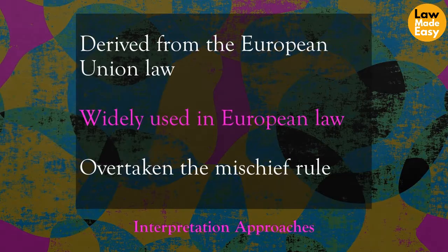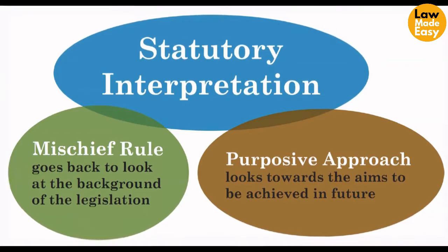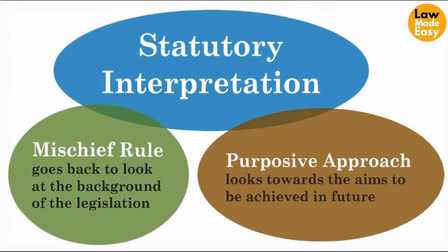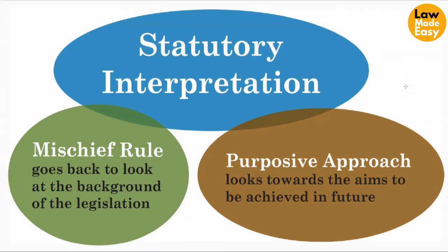While discussing the purposive approach — and as noted at the start of this lecture, it has overtaken the mischief rule to some extent — there is still a difference between the two. We can understand this difference through the diagram. As you can see, the mischief rule looks back at the background of the legislation and what was the intention of the legislature in the past. On the other hand, the purposive approach looks towards the aims which are to be achieved in the future, and this has been borrowed from European Union law. Purposive approach has become far wider than the mischief rule and looks at the purpose and the social impacts of the legislation. The mischief rule supposes that the intent of the legislature in passing any enactment was to remedy a certain mischief, and it goes back to the past to look at the background.